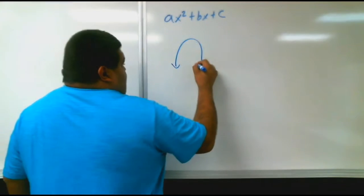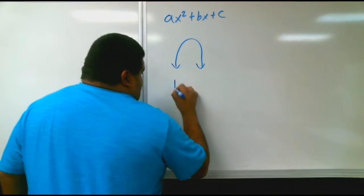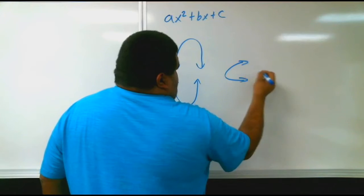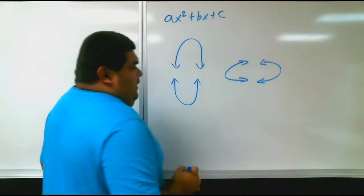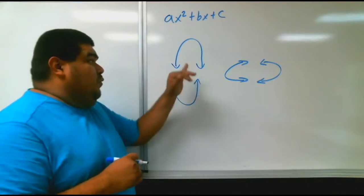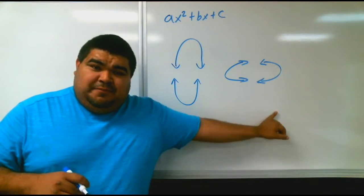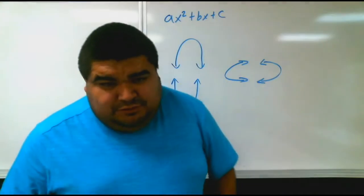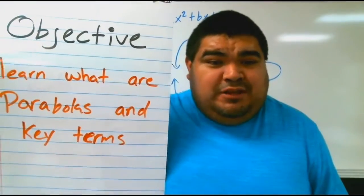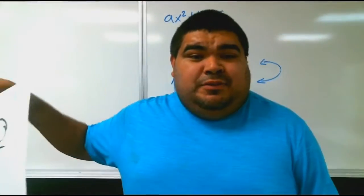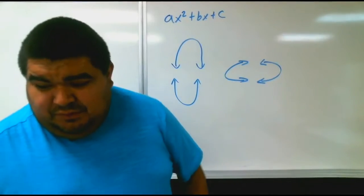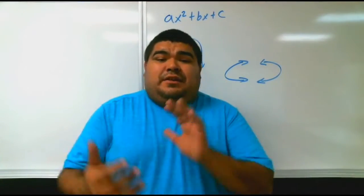You might see it going face down, you might see it going up, you may even see it sideways. You may see it one of four ways. Today you're going to learn how to distinguish it, how to graph it. Our objective for today is to learn what parabolas are and some key terms that we need in order to know how to graph them, label them, and find the equation.